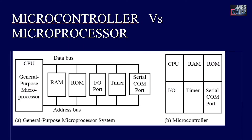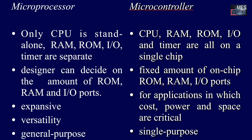Moving on to the first topic: microprocessor versus microcontroller. These are the block diagrams of a microprocessor and a microcontroller. In a microprocessor, only the CPU is standalone and the memory and peripherals are separate, whereas in a microcontroller they are all integrated into a single chip. In a microprocessor, only the CPU is standalone; RAM, ROM, input/output, and timer are separate. But in the case of a microcontroller, all these are integrated on a single chip.